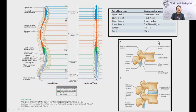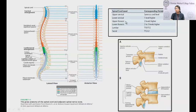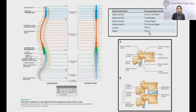The vertebral column in embryological development grows much faster than the spinal cord, so cord and vertebral levels don't always correlate. Upper cervical cord level corresponds to the same vertebral body; lower cervical cord is one level higher in the vertebral column. Upper thoracic is two levels higher, lower thoracic is two to three levels higher. Lumbar cord corresponds to T10 to T12 vertebral bodies, and sacral cord corresponds to T12 and L1 of the vertebral column.